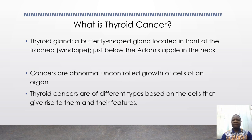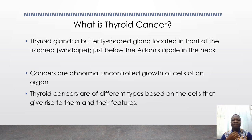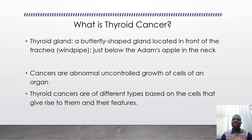What is thyroid cancer? To begin with, the thyroid gland is a butterfly-shaped gland located in front of the trachea — the windpipe — just below the Adam's apple, in the neck. Cancer is an abnormal uncontrolled growth of cells of an organ, and so thyroid cancer is an abnormal growth of cells of the thyroid gland in the neck.